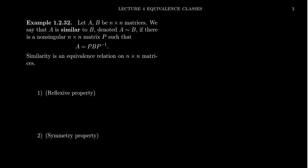We say that the two matrices are similar — A is similar to B — and we'll denote this as A twiddle B. We say that A is similar to B if there exists a non-singular matrix P, which is also n by n. In this context, non-singular matrix means it has a matrix inverse. We say that A is similar to B if there's some non-singular matrix such that A equals P B P inverse. So there's some factorization of A that involves the matrix B.